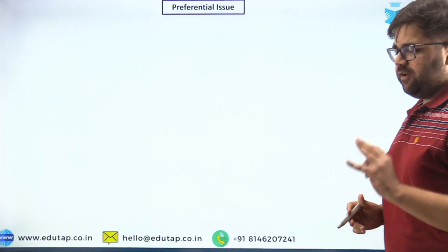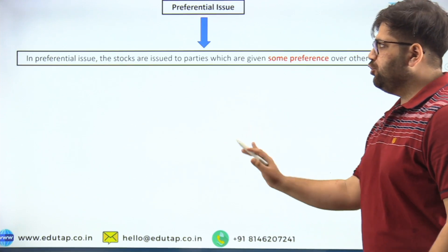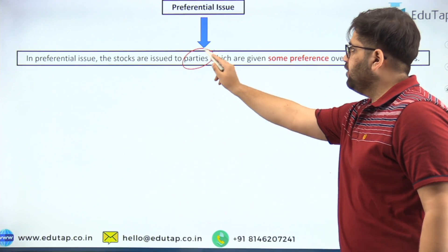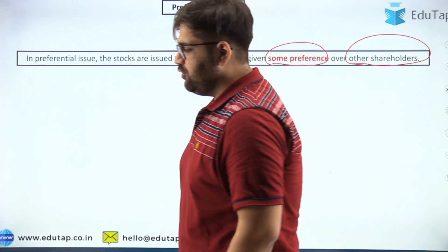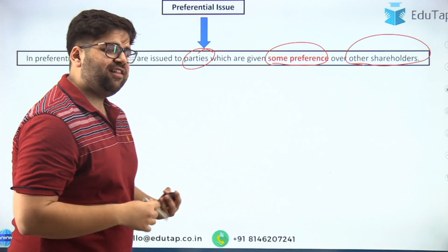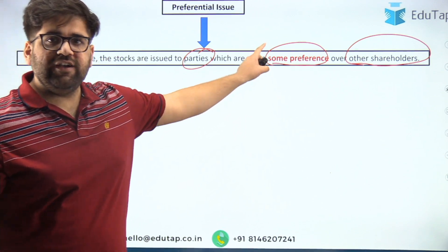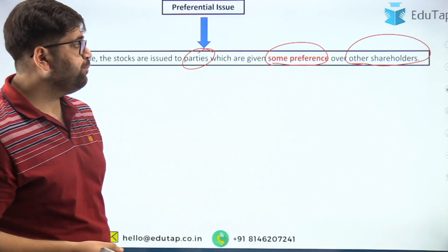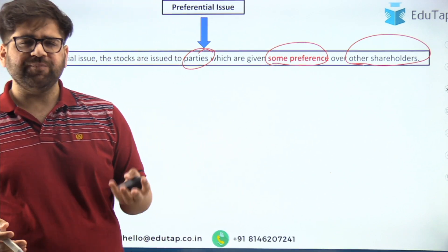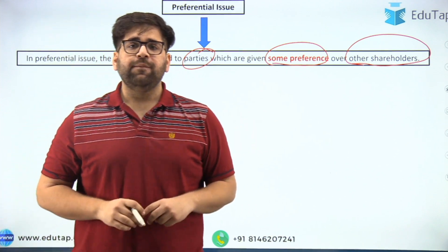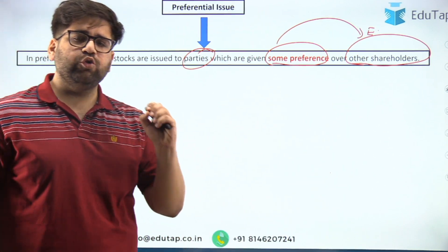Starting with the definition of preferential issue, we will go deep into the different types and features. In a preferential issue, stocks are issued to certain parties who are given some preference over other shareholders. There are three key terms here: stocks are issued to certain parties — generally investors in the stock market — who are given some preference over other shareholders, meaning equity shareholders. In a company, there are mainly two types of shareholders: equity shareholders and preference shareholders.